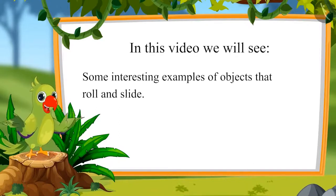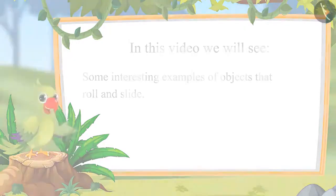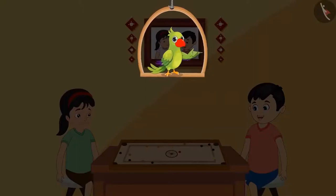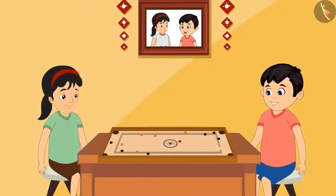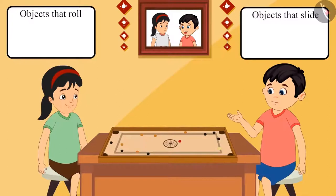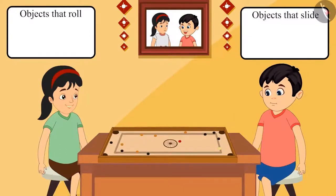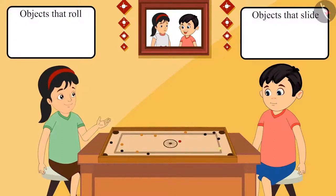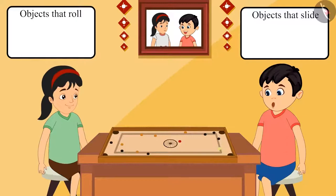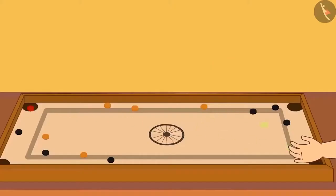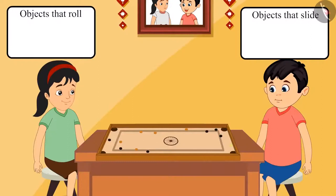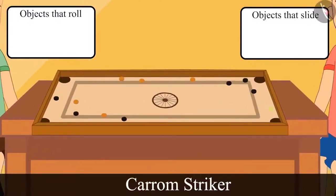We will see some interesting examples of objects that roll and slide. Chotu and Pinky have come home from school today and are playing carom. Pinky, do you remember that we have been asked in school to make a list of items that roll and slide? Yes Chotu, I remember. Let's make the list after playing. But Chotu, how shall we know which object slides and which object rolls? We will have to think about it. I tossed the queen in the pit. Hey Chotu, these pieces are sliding into the pit.